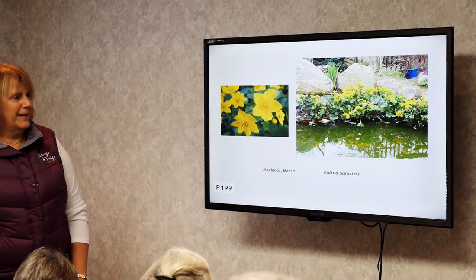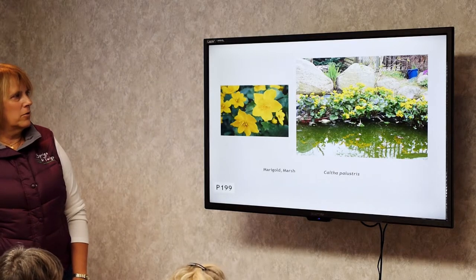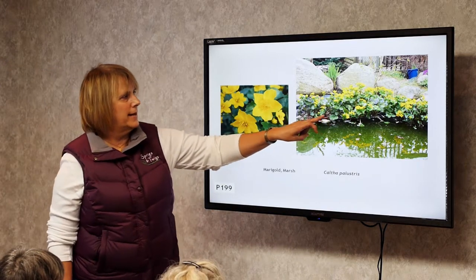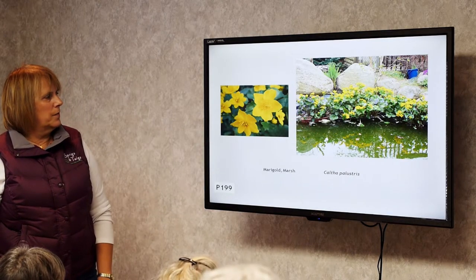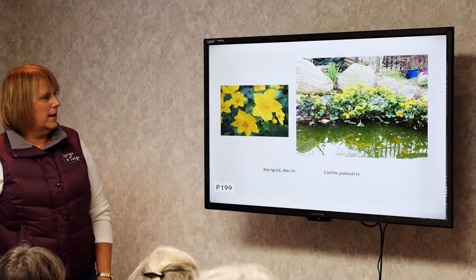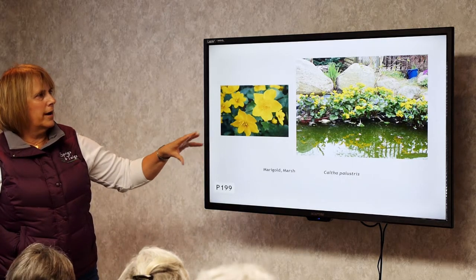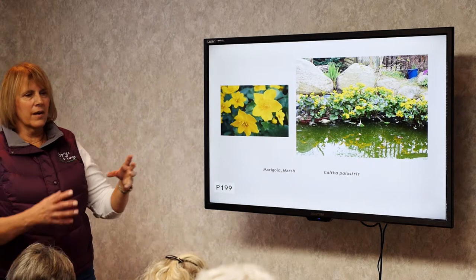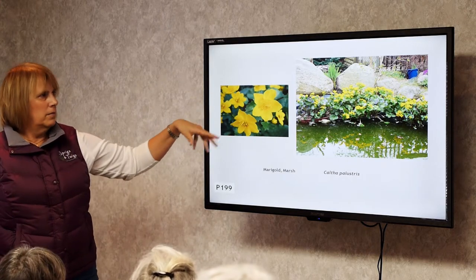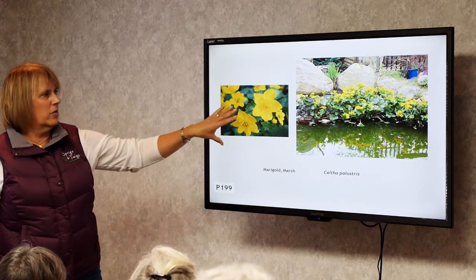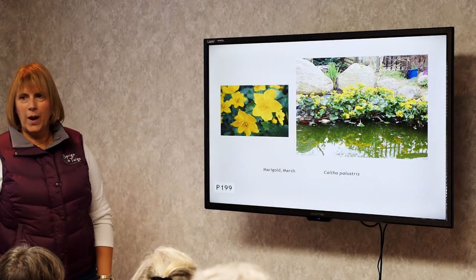Marsh Marigold. This is definitely a wet soil plant that grows right in or near the water. It blooms in the spring. Around our water areas you'll see skunk cabbage come up in the spring, and then a couple months later Marsh Marigold comes up. It has to be very wet.